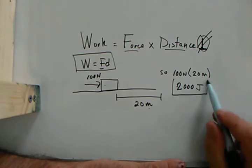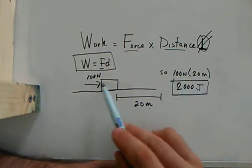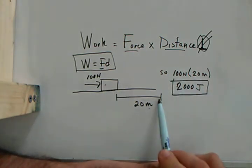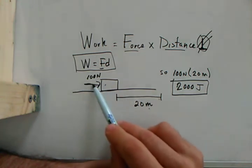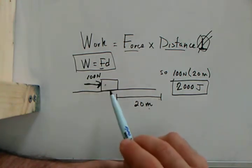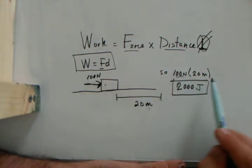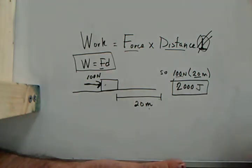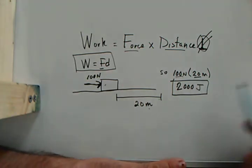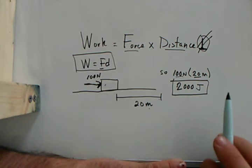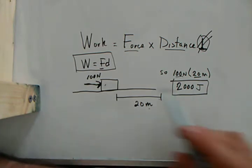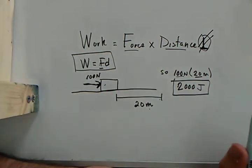So the work I've done to this object moving at 20 meters, if my net force is 100, it's 100 force times the distance of 20 meters, we've got 2000 joules. So that's how simple work is. It's a three step process.